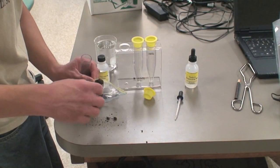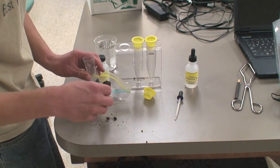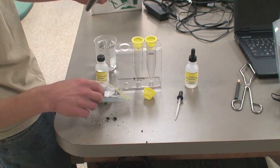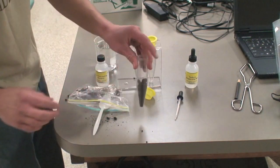First, fill one of the tubes up to the 15 milliliter line with some of your soil sample. Tap the tube to get rid of air spaces, and afterward make sure you still have the correct amount of soil in the tube.